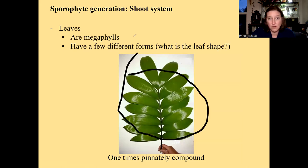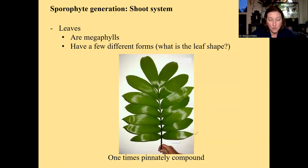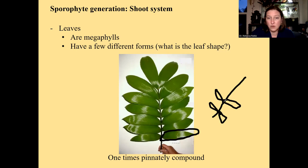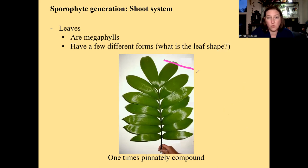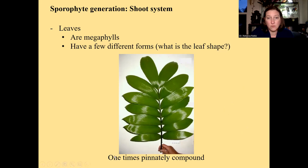To keep using these terms: this whole green section is the blade or lamina. The rachis is this whole stem part going through the inside of the blade, and the petiole on this leaf is just this little section at the bottom. This is how we build our understanding of these terms.